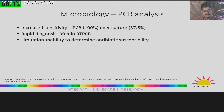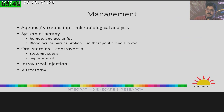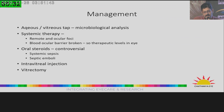Management involves taking an aqueous or vitreous tap and sending it for microbiological analysis. Systemic therapy plays a key role in endogenous endophthalmitis because it treats both the remote and ocular foci, and since the blood-ocular barrier is broken, the drug can achieve therapeutic concentration in the eye. Oral steroids are extremely controversial because most of these patients are in systemic sepsis, and unlike exogenous endophthalmitis where toxins play a key role, here one of the pathogenic mechanisms is septic emboli, so steroids are usually not preferred. Treatment options include intravitreal injections or vitrectomy, with intravitreal vancomycin or ceftazidime/imipenem used when suspecting bacterial infection.